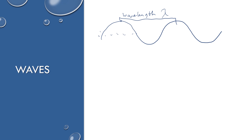If you were to count the number of waves that pass a point in a particular amount of time, that would be called the frequency — typically measured per second. For frequency, you'll sometimes see the letter F and sometimes the Greek letter nu, which looks like a V.